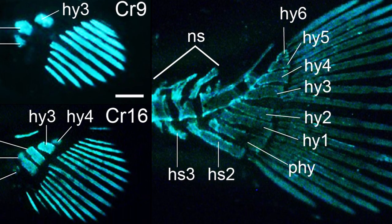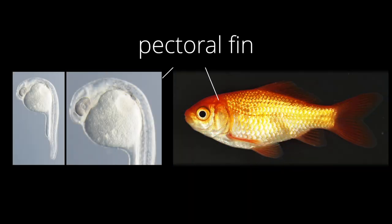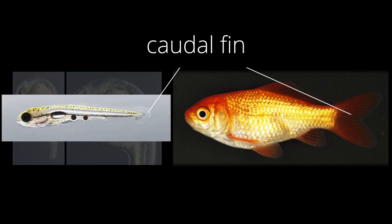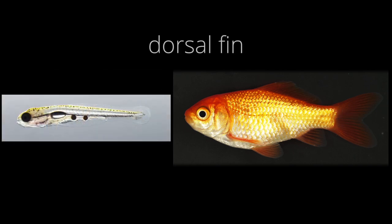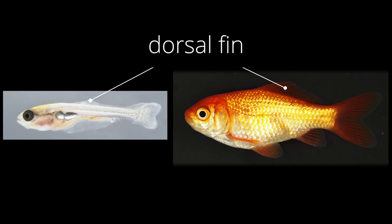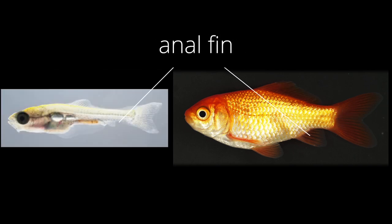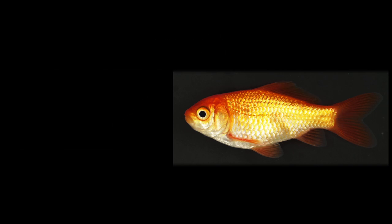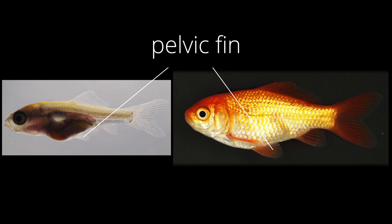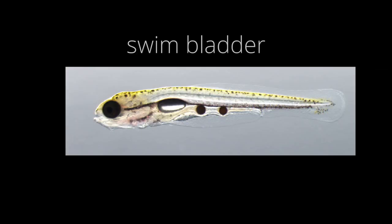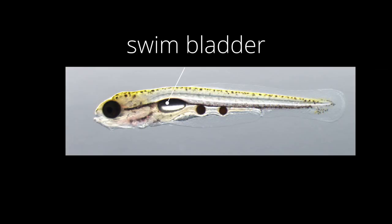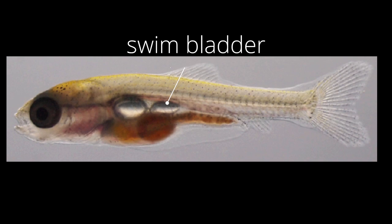For example, fins develop in this order: pectoral fins, caudal fin, dorsal fin, anal fin, and then pelvic fins. Additionally, the swim bladder initially forms as one and later divides into two as it grows.